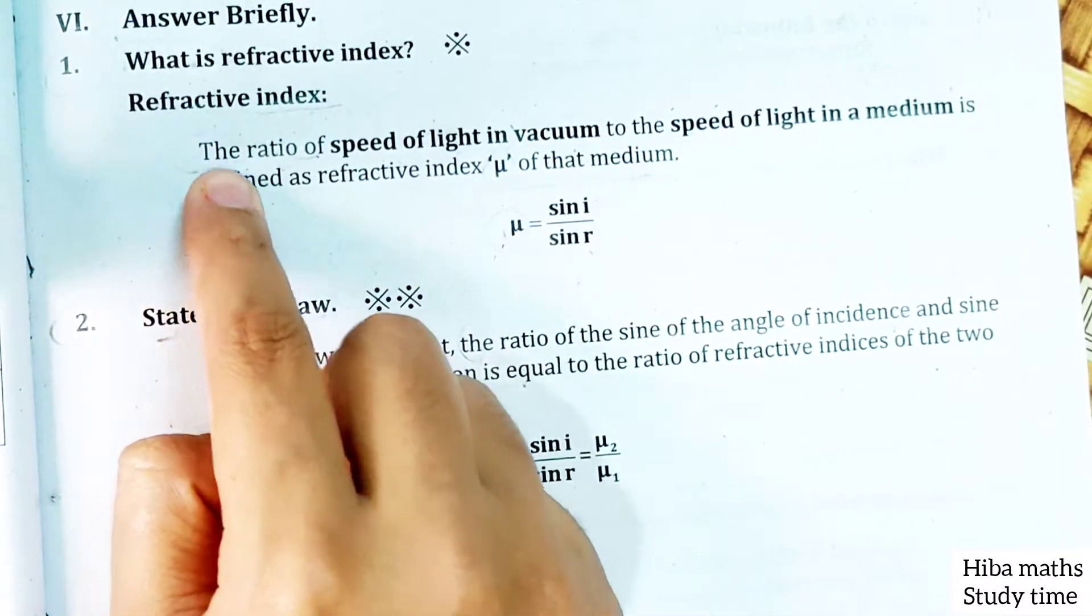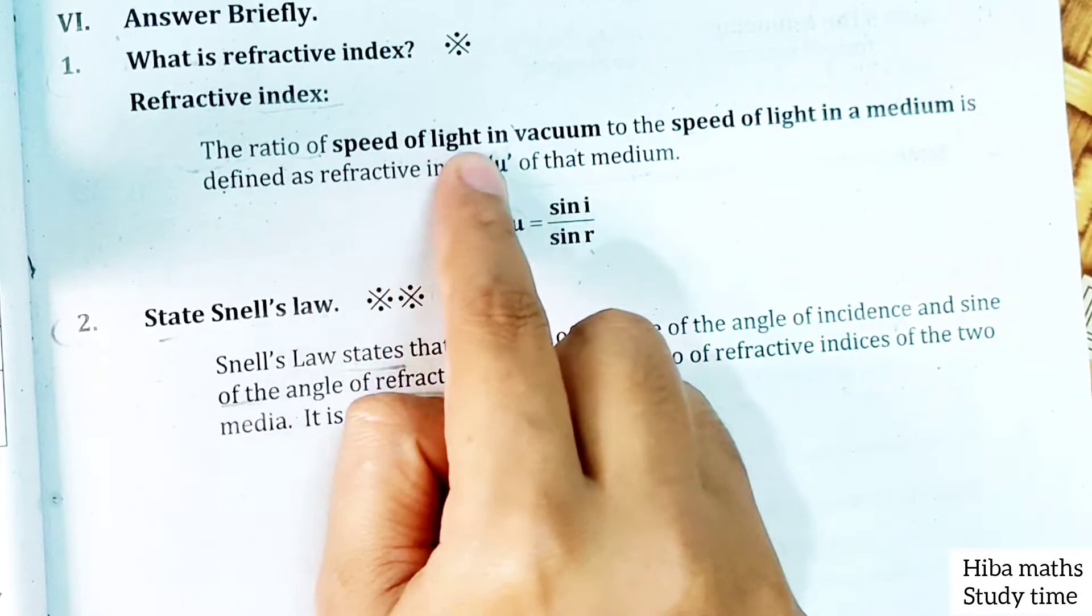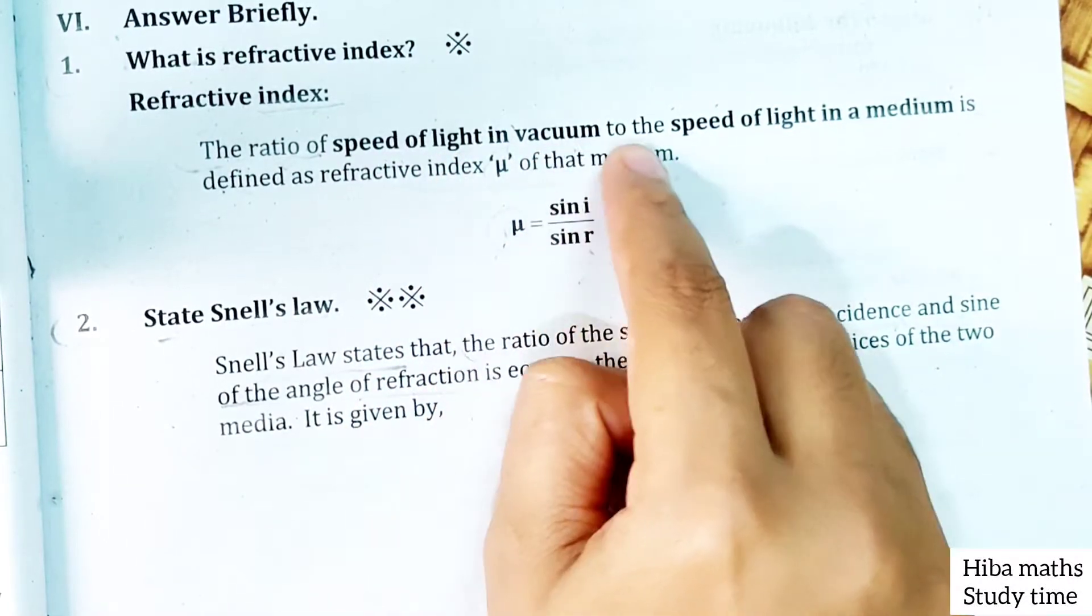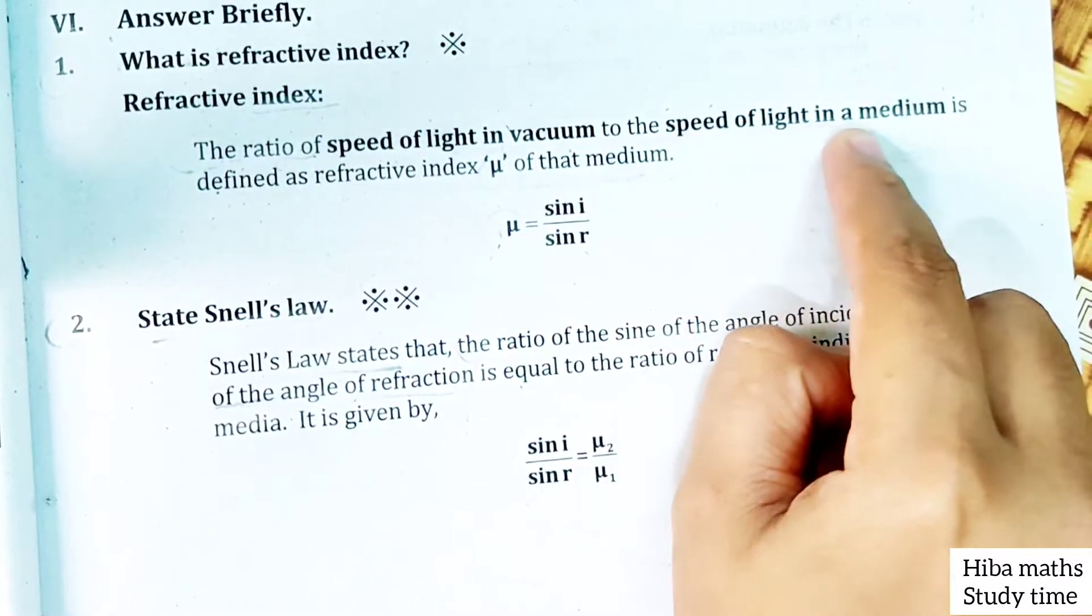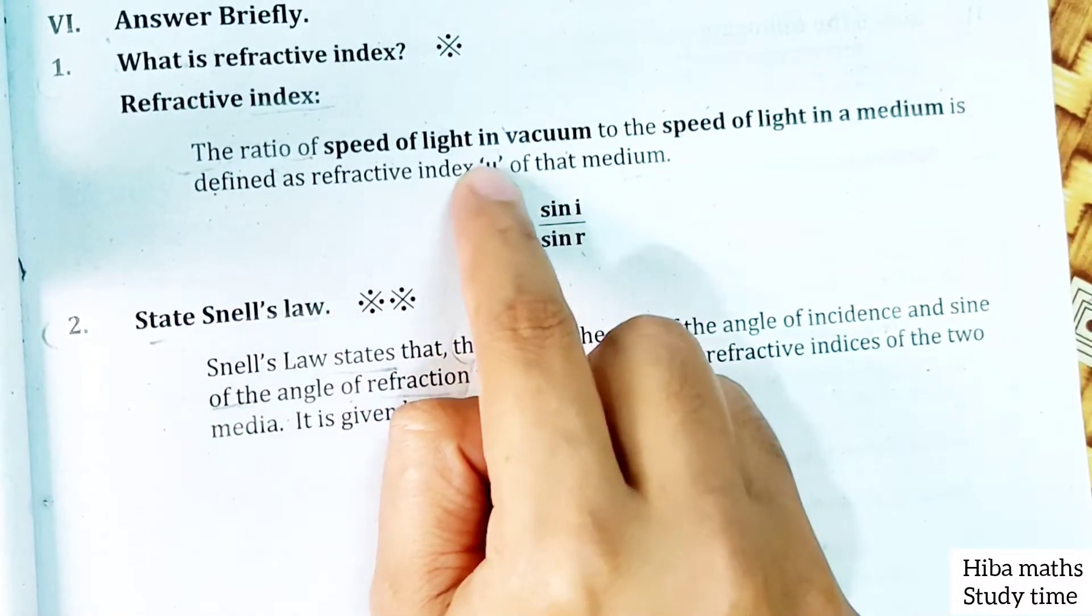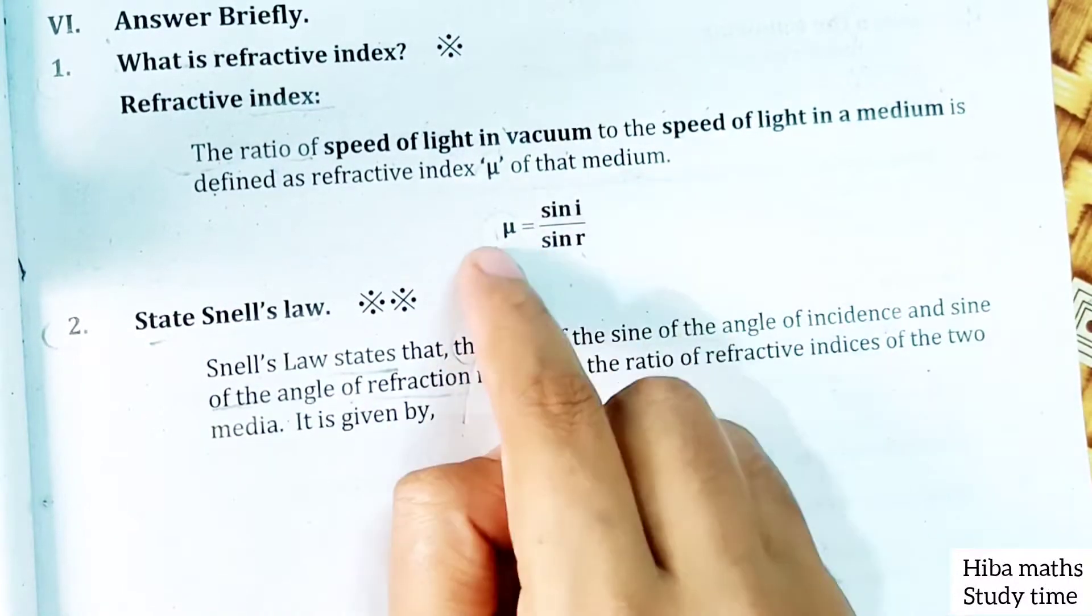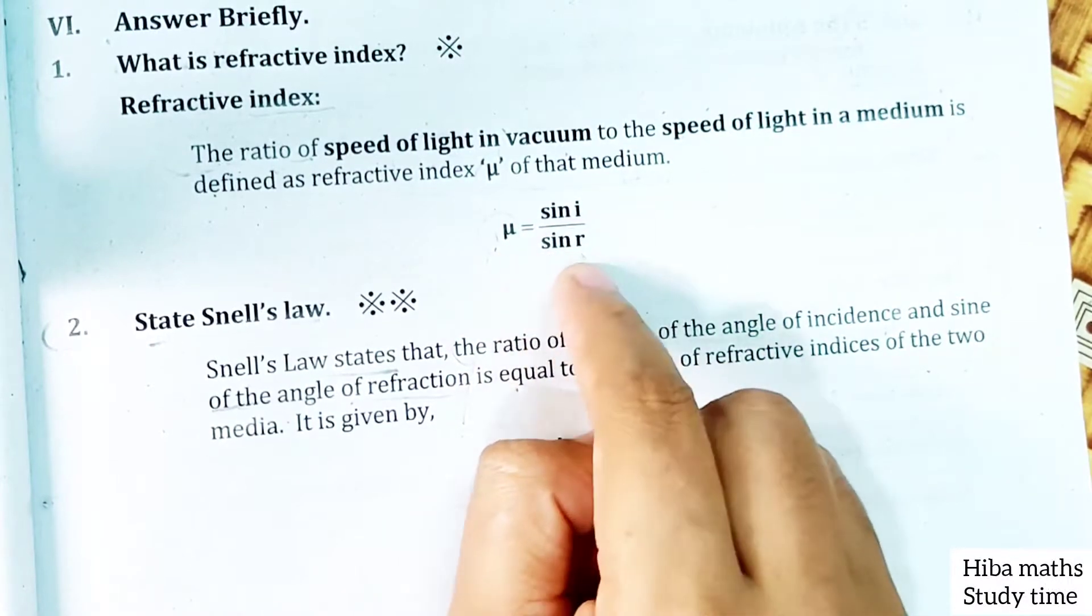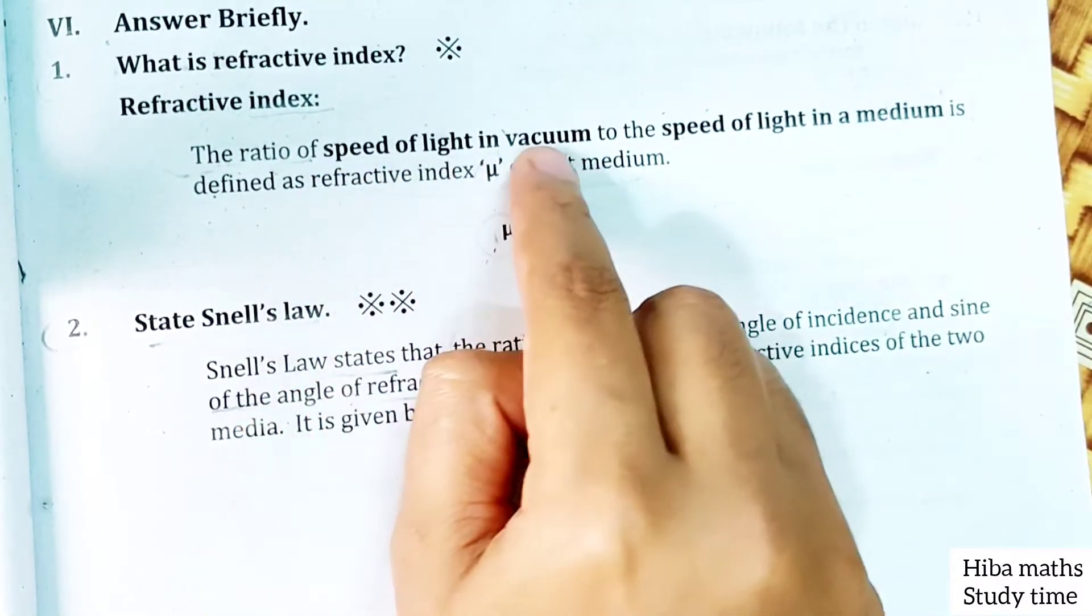Refractive index: the ratio of the speed of light in vacuum to the speed of light in a medium is defined as refractive index, denoted as 'μ' of that medium. So μ is equal to sin i by sin r.